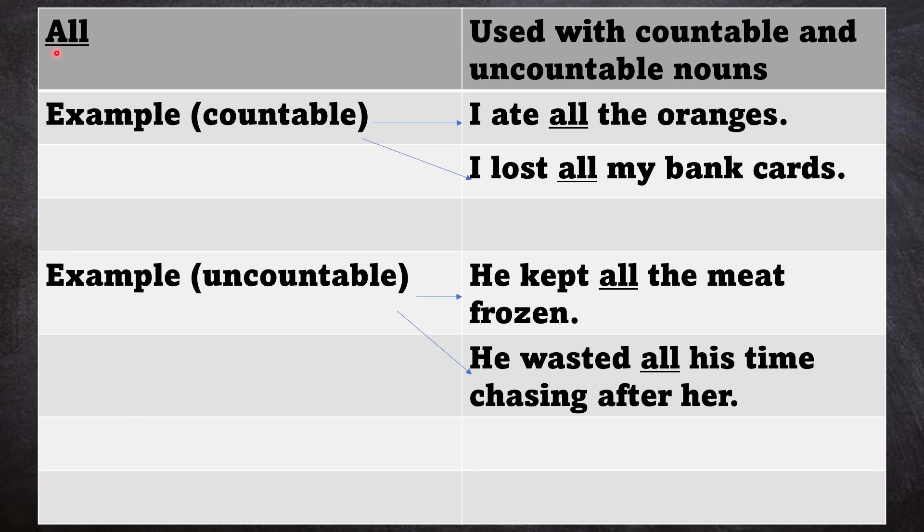Then we have all. All is used with countable and uncountable nouns. Example for countable: I ate all the oranges. I lost all my bank cards. The example of uncountable noun being used by the quantity word: he kept all the meat frozen. He wasted all his time chasing after her. So you can see all these underlined words, those are the quantity words.